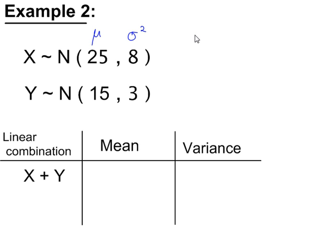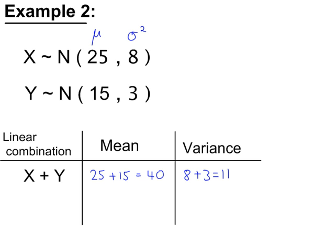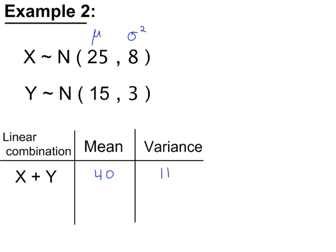Example 2. x plus y: the mean of this new normal variable, x plus y, is the mean of x plus the mean of y, so 25 plus 15, giving a new mean of 40. We always add variances, so 8 plus 3, giving a new variance of 11. So x plus y is a normal variable with a mean of 40 and a variance of 11.